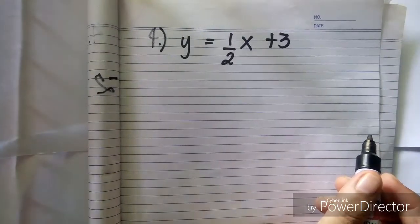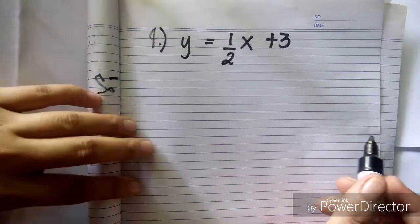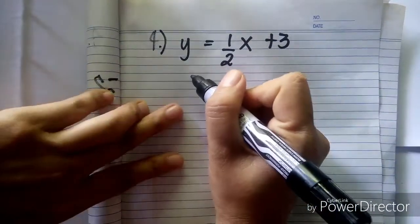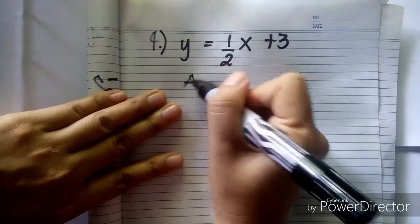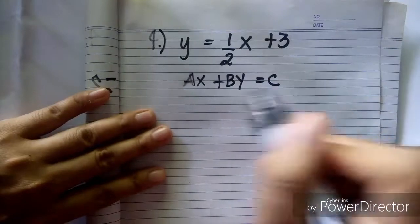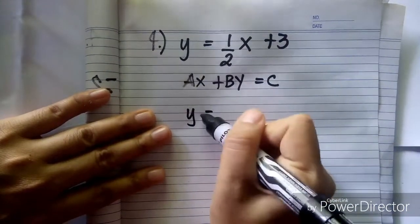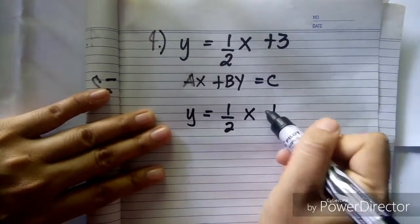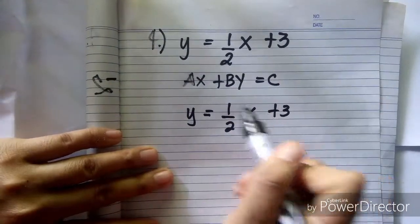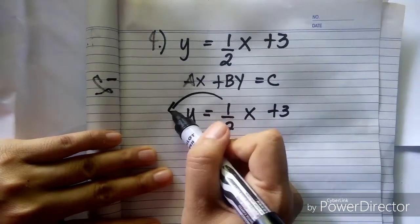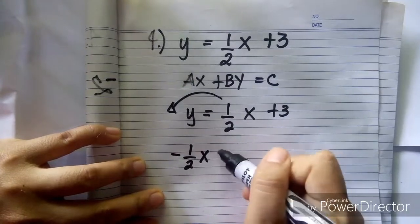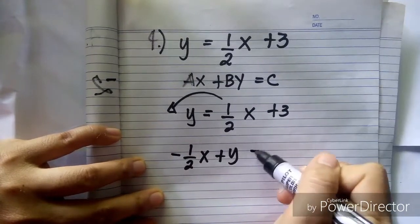The fourth example is y equals one-half x plus 3. This is slope-intercept form, and we're going to rewrite this equation into standard form ax plus by equals c. First, we transpose one-half x to the other side, so it becomes negative one-half x plus y equals 3.